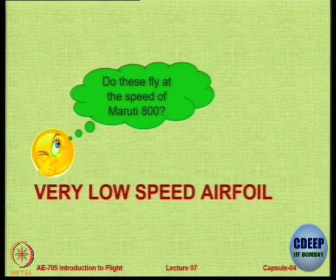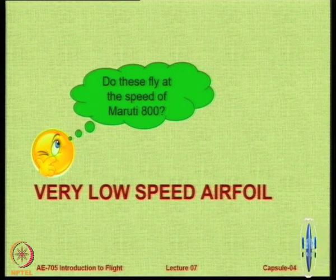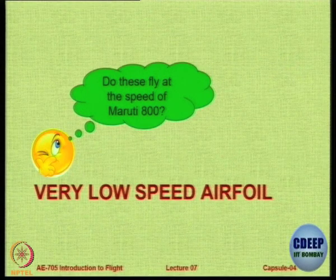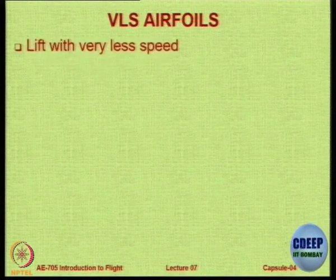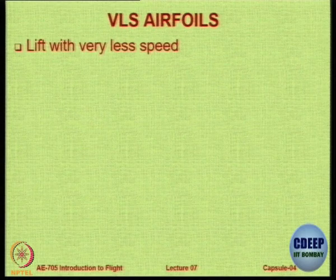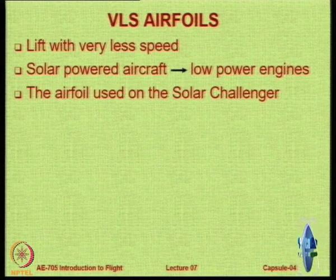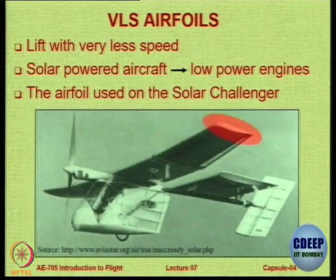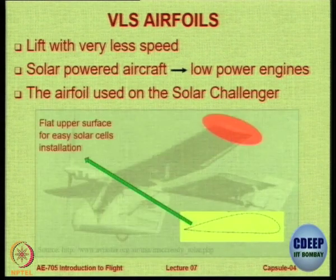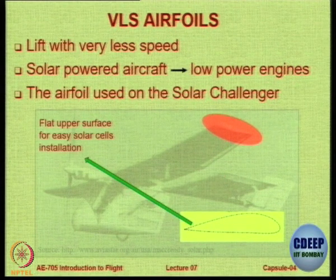Let us look at aerofoils for even lower speeds — lower than those we have seen so far. Applications include UAVs — unmanned aerial vehicles — for which we have seen Klein aerofoils. These are called VLS aerofoils, very low speed aerofoils. They are very common in modern solar-powered aircraft, where the goal is to fly with the least possible power. One example is the Solar Challenger, whose aerofoils have a flat top surface so that solar cells can be mounted properly — solar cells work best when they are flat due to uniform solar radiation. These aerofoils have a flattish bottom surface, a flattish top surface, and some curvature at the front.